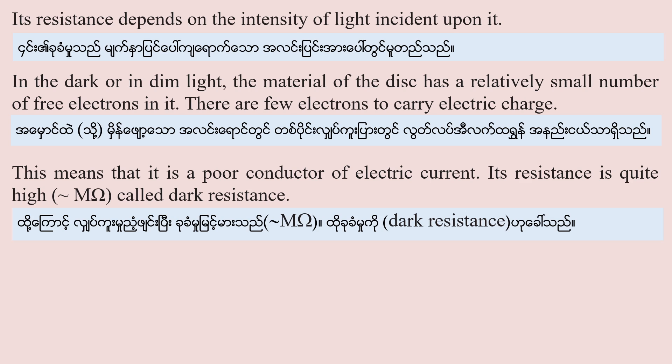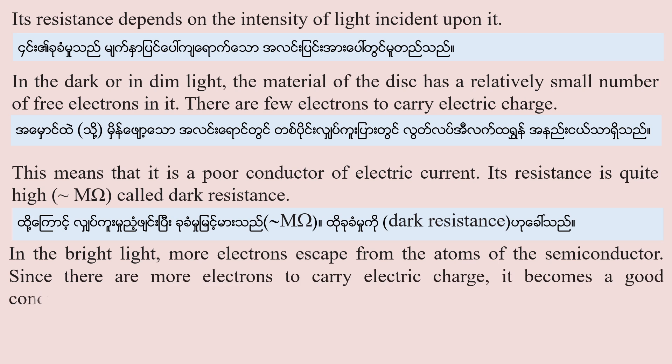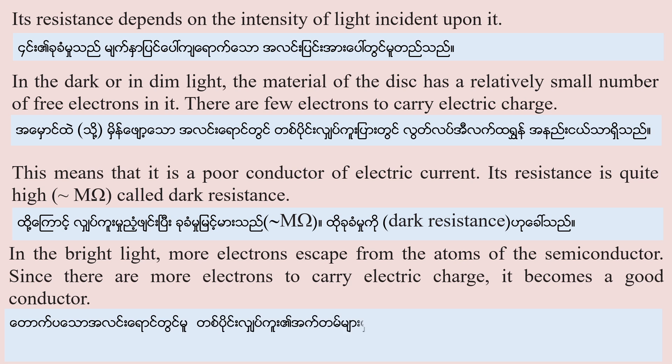In bright light, more electrons escape from the atoms of the semiconductor. Since there are more electrons to carry electric charge, it becomes a good conductor.